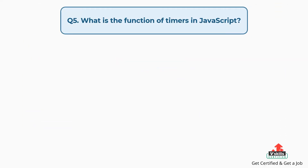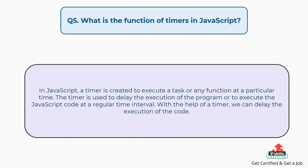Question number five: what is the function of timers in JavaScript? In JavaScript, a timer is created to execute a task or any function at a particular time. The timer is used to delay the execution of the program or to execute JavaScript code at a regular time interval. With the help of a timer, we can delay the execution of the code.